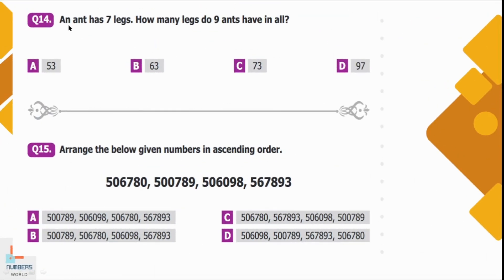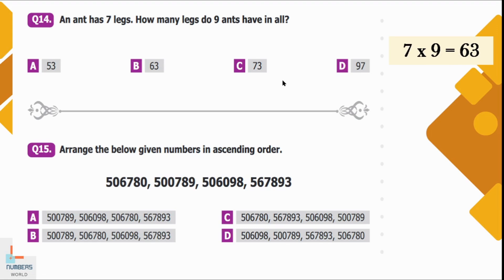Question number 14: An ant has seven legs. How many legs do nine ants have in all? One ant has seven legs and there are nine ants in total. Nine sevens are 63. Option B is the correct option.